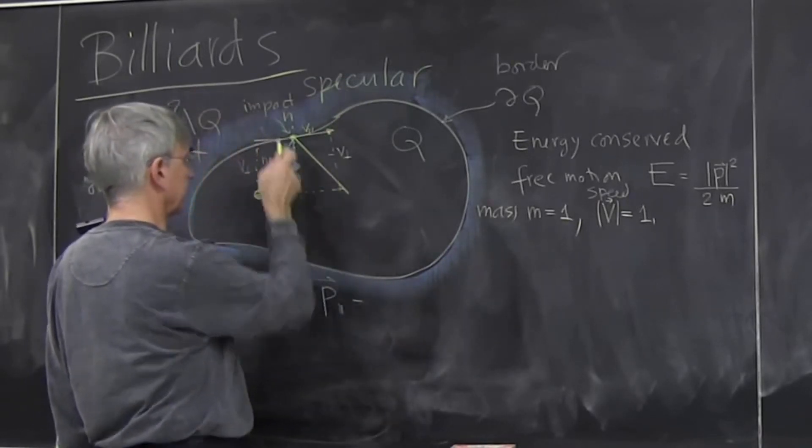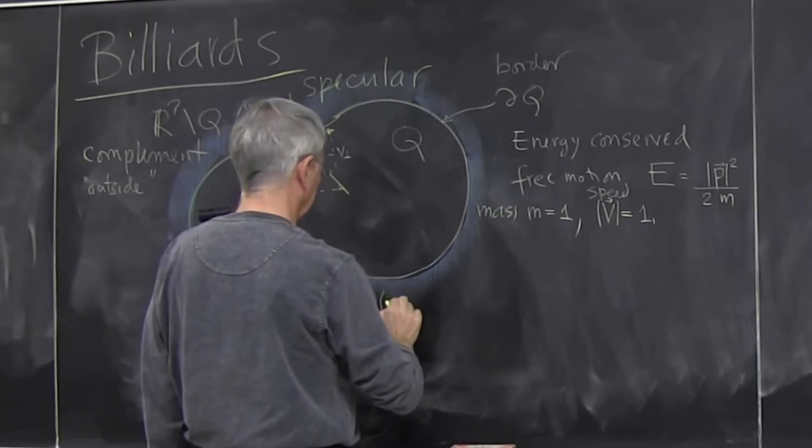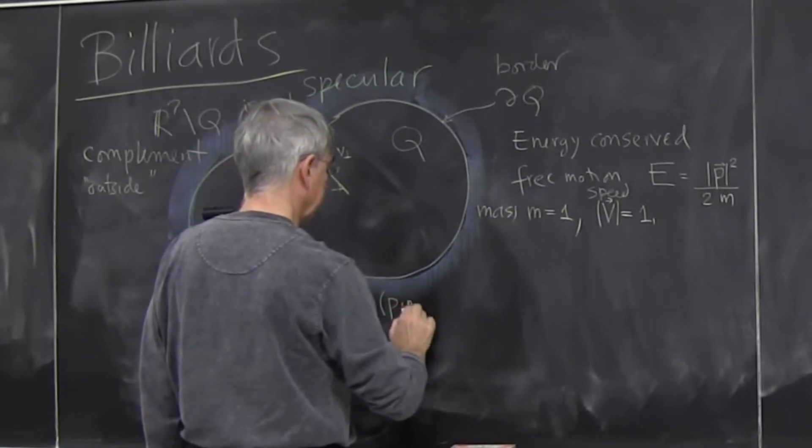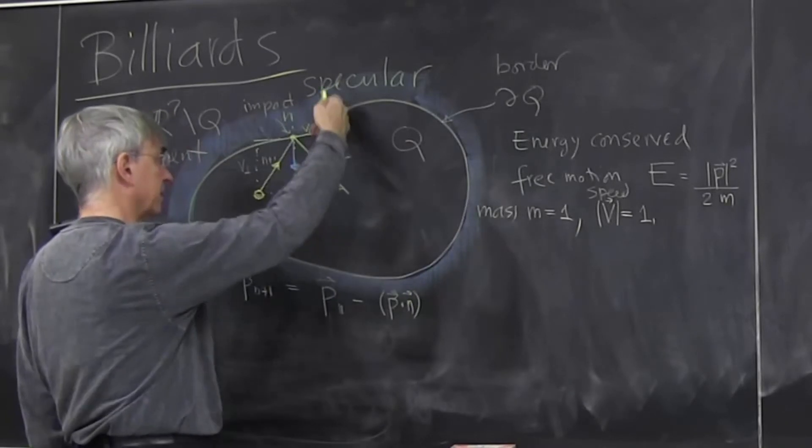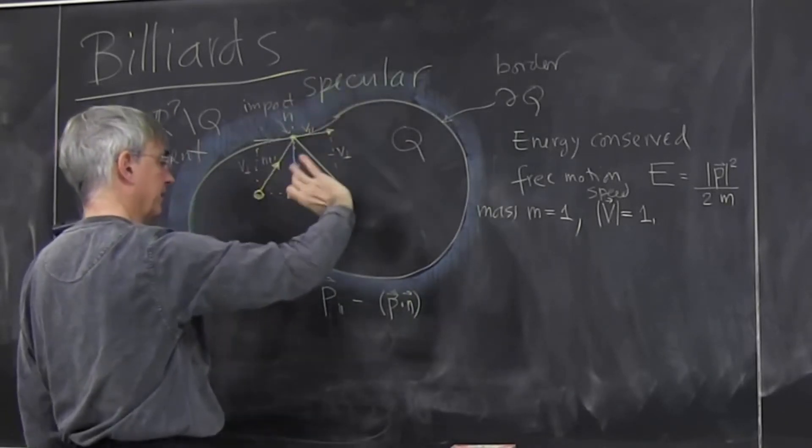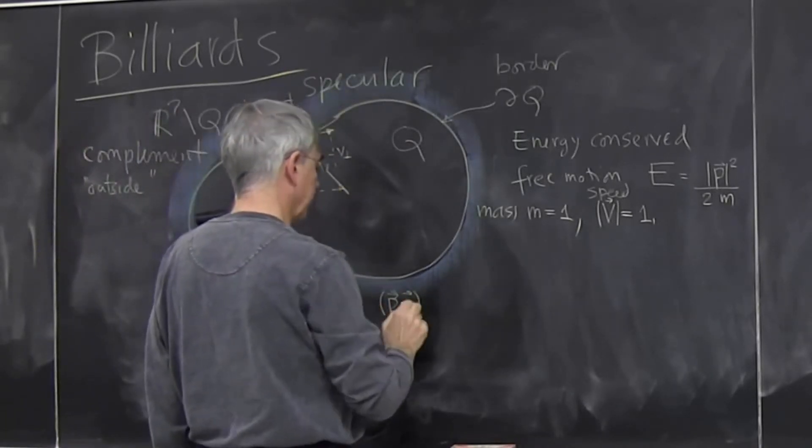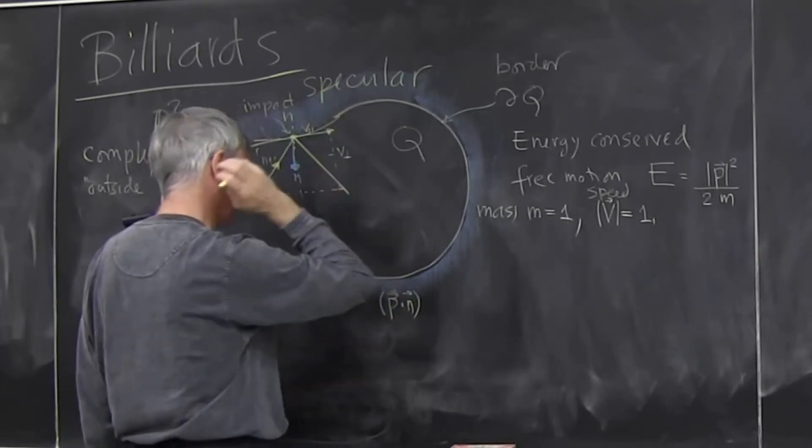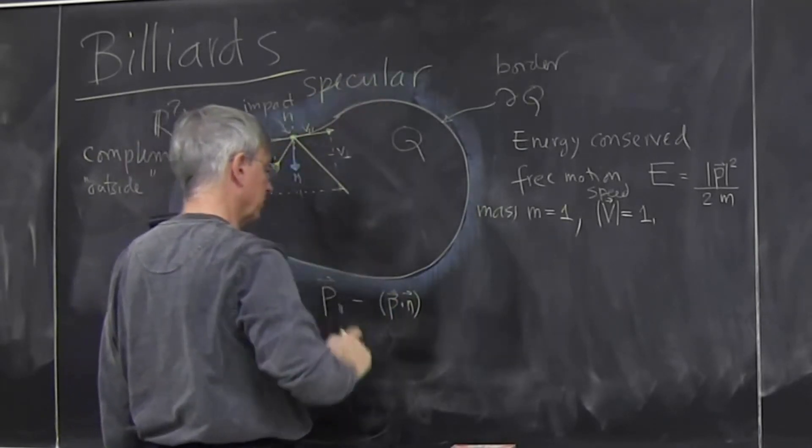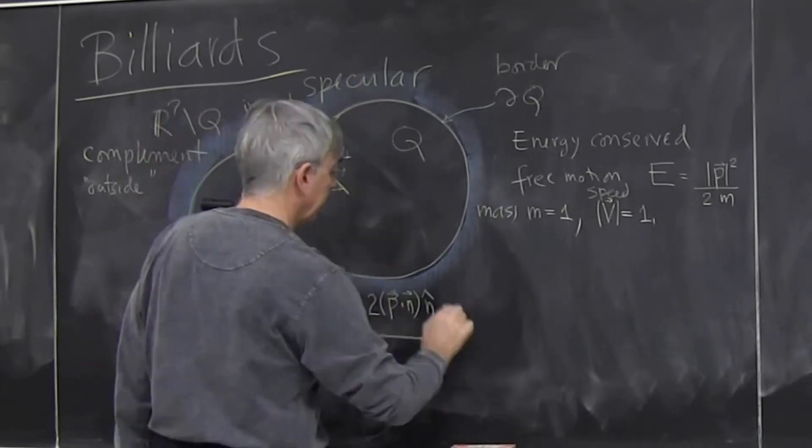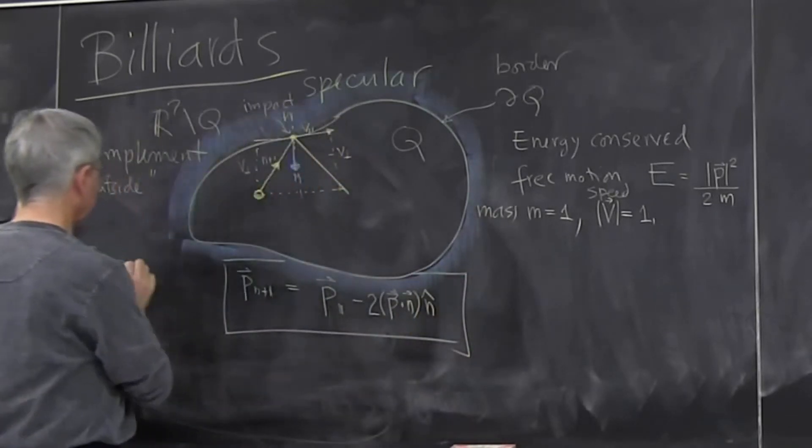It's the same as the previous momentum but we have to subtract the normal components. So we project the vector onto normal components, so we write p dot n. Then we have to subtract the thing that was pointing this way. The total momentum transfer to the immutable, immobile wall is twice that. That's it. That's specular reflection.